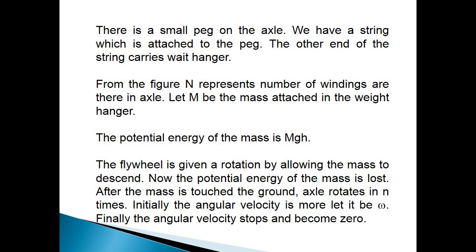There is a small peg on the axle. We have a string which is attached to the peg. The other end of the string carries weight hanger. From the figure, capital N represents the number of windings in the axle. Let M be the mass attached to the weight hanger.